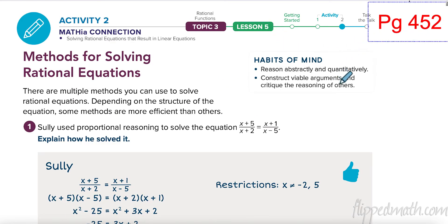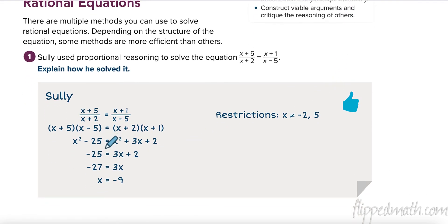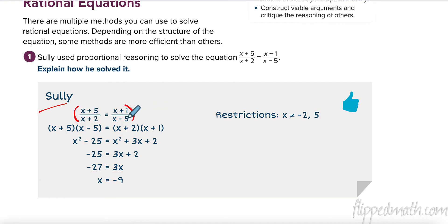All right, here is our first jump. We're going to page 452. This problem is Sully — hey, that's me. So when we do this problem, let's first talk about what I need to multiply to cancel. I don't want fractions — I'm going to get rid of these fractions and make an equivalent equation without fractions. To cancel the quantity x plus 2, I need to multiply by x plus 2. To cancel over here, I need x minus 5.